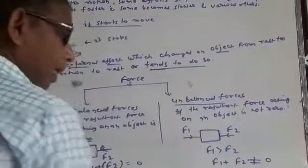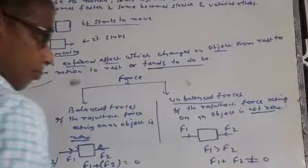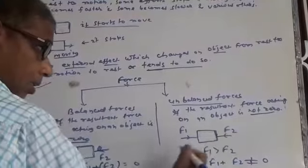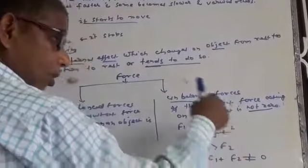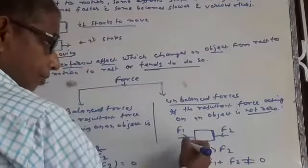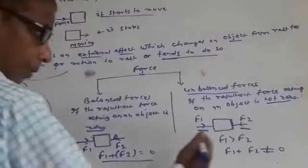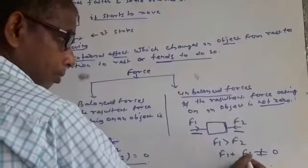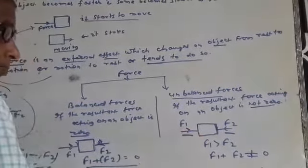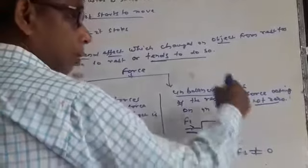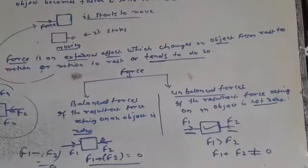Similar thing happens here for unbalanced. If the resultant force acting on an object is not zero. An object is under the effect of F1 force and a force F2 is also acting on the object but in a different direction. But the value, magnitude of both the forces are different. F1 greater than F2. So F1 plus F2 not equal to zero. The object will move in the direction of F1. In such condition, we can say sum of the forces is not equal to zero. This means this object is under the effect of unbalanced force.